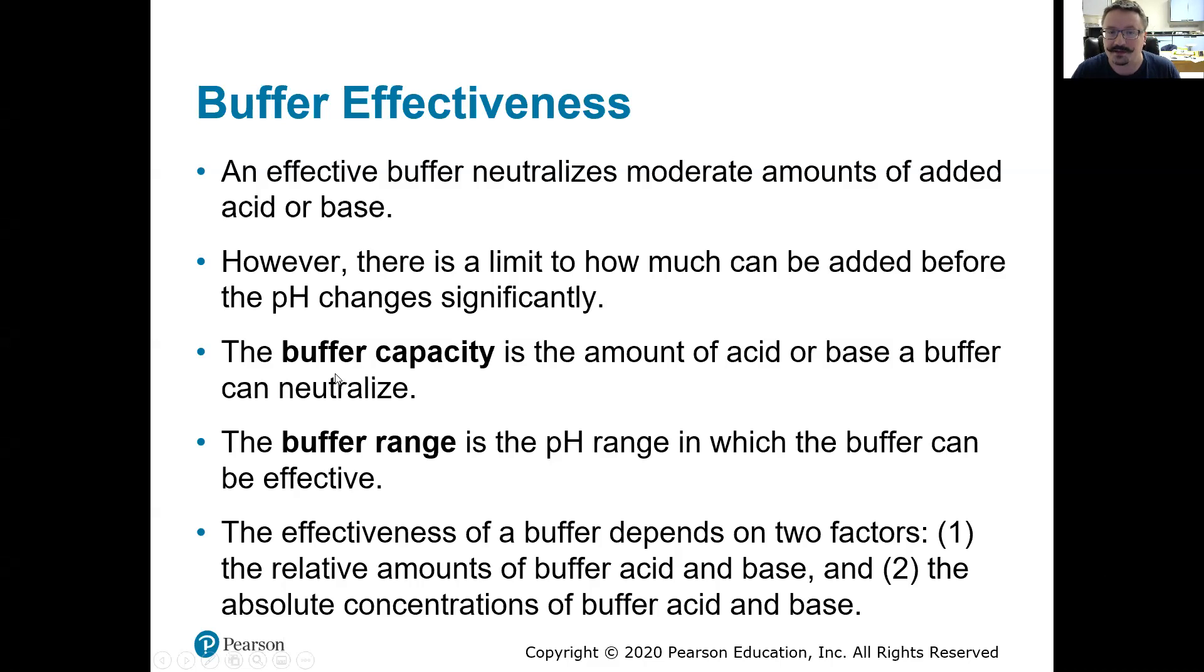We're going to look at two important things. The buffer capacity. What is the amount of that acid or base that it can neutralize? How much acid could we add? And what's the buffer range, which is going to be different for every buffer. In other words, what's the ideal pH range or the working pH range for that buffer? And some might be more acidic. Some might work really well from a range of four to six. Others might work well from a range of seven to nine or 10 to 12 or whatever it happens to be.